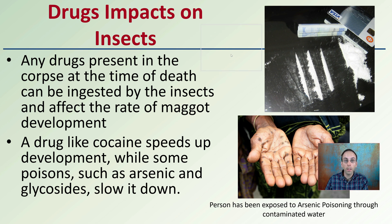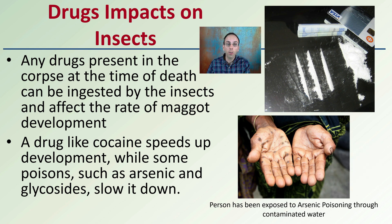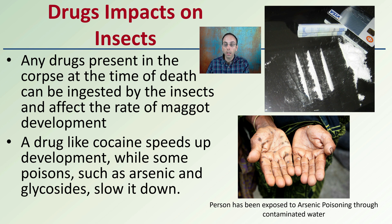Drugs can also impact the presence and development of insects. Any drugs present in the corpse at the time of death can be ingested by the insects themselves and affect the rate of their development. A drug like cocaine speeds up development, while some poisons, such as arsenic and glycosides, can slow it down. It is important to identify what drugs may have been present. Here we see an example of a person being exposed to arsenic poison through contaminated water over an extended period of time.